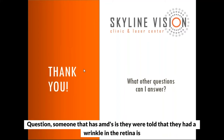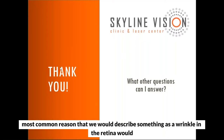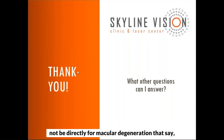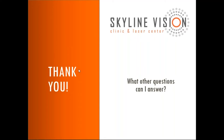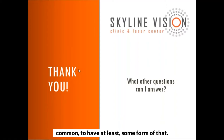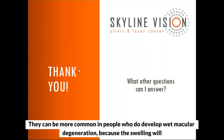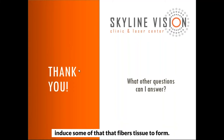Someone with AMD was told they had a wrinkle in the retina — is that part of macular degeneration symptoms? The most common reason we would describe something as a wrinkle in the retina would not be directly from macular degeneration. That's what we call an epiretinal membrane. It's a really common condition to have at least some mild form of. They can be more common in people who develop wet macular degeneration because the swelling can induce some of that fibrous tissue to form, but right off the bat I would not make that direct linkage.